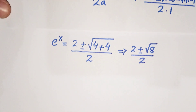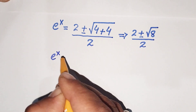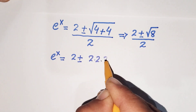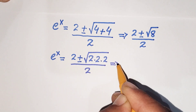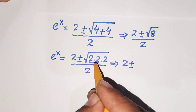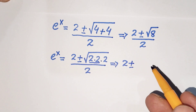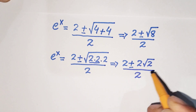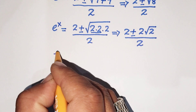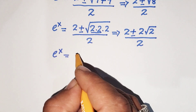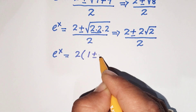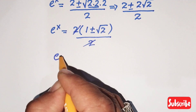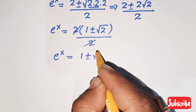So e raised to power x equals 2 plus or minus square root of 4 plus 4, all over 2. The value under the square root, 4 plus 4 equals 8, which can be written as 2 times 4, so square root of 8 equals 2 root 2. Taking 2 common: e raised to power x equals 1 plus or minus square root of 2.